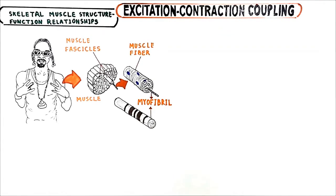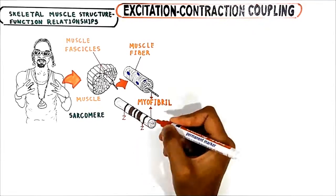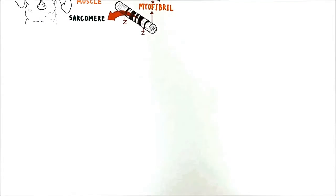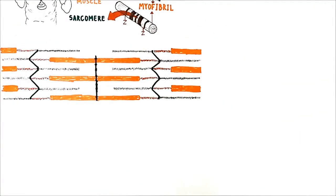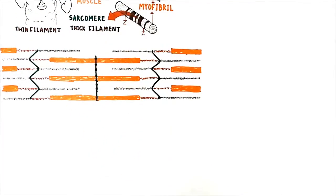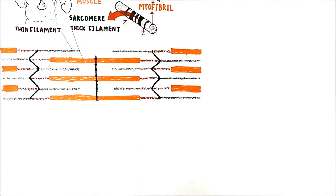Myofibrils in turn contain sarcomeres. A sarcomere is demarked by Z lines — one sarcomere starts here and terminates over here, from Z line to Z line. The organization of sarcomeres within the skeletal muscle produces its striated appearance. Sarcomeres are composed of thin and thick filaments.